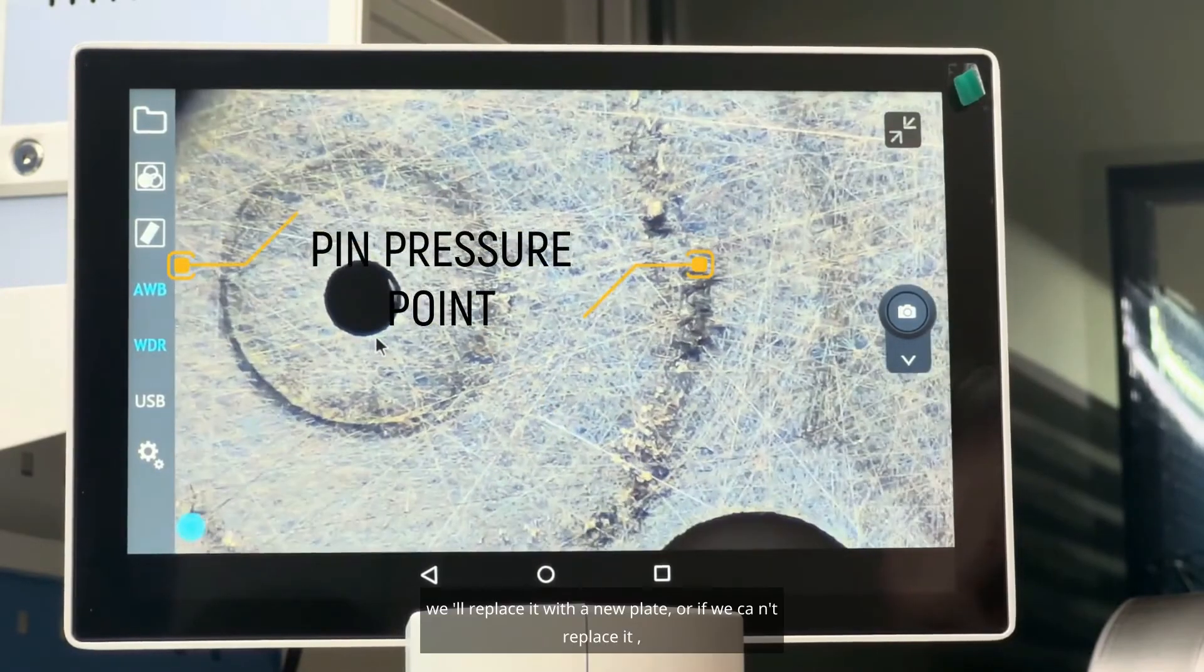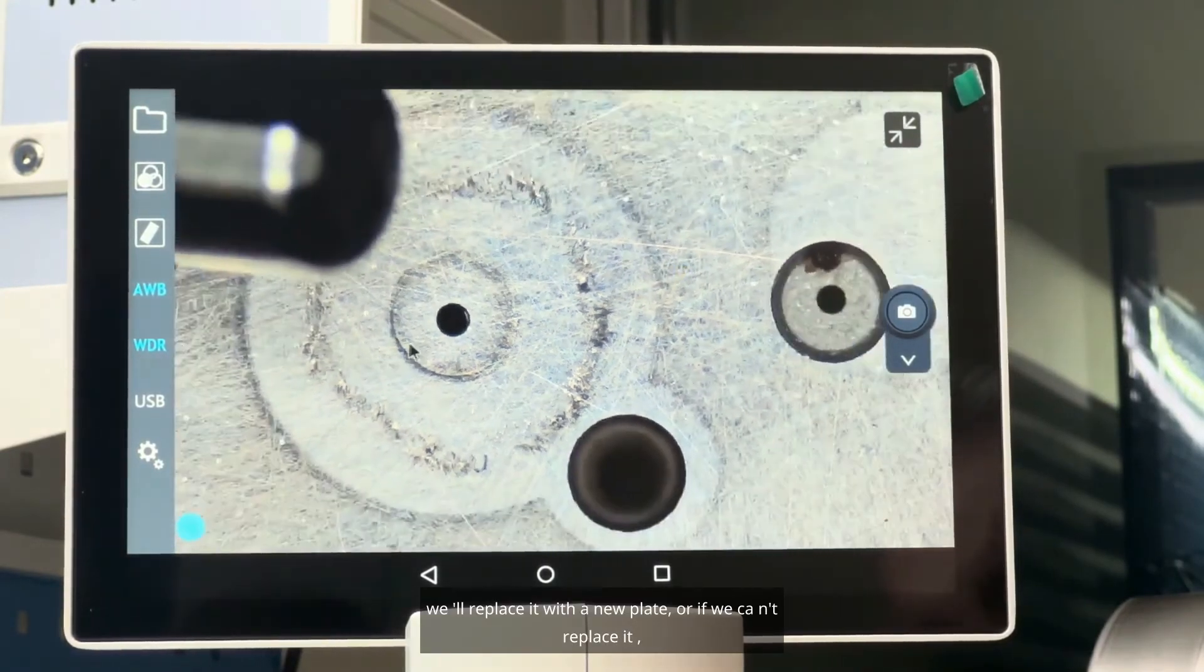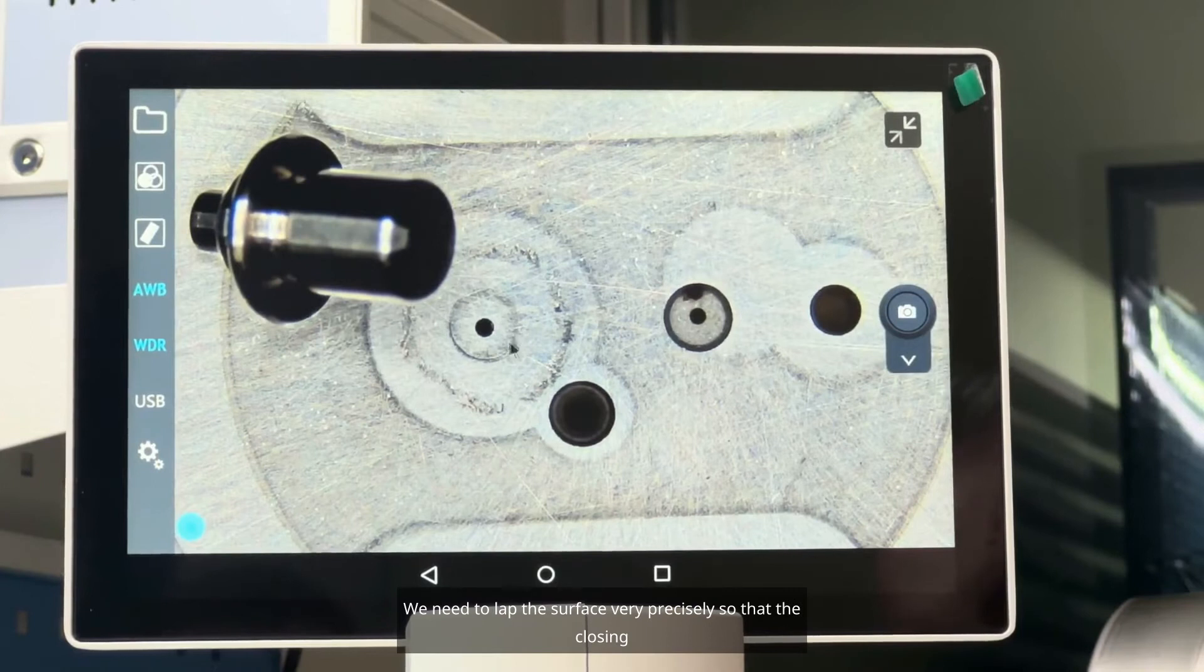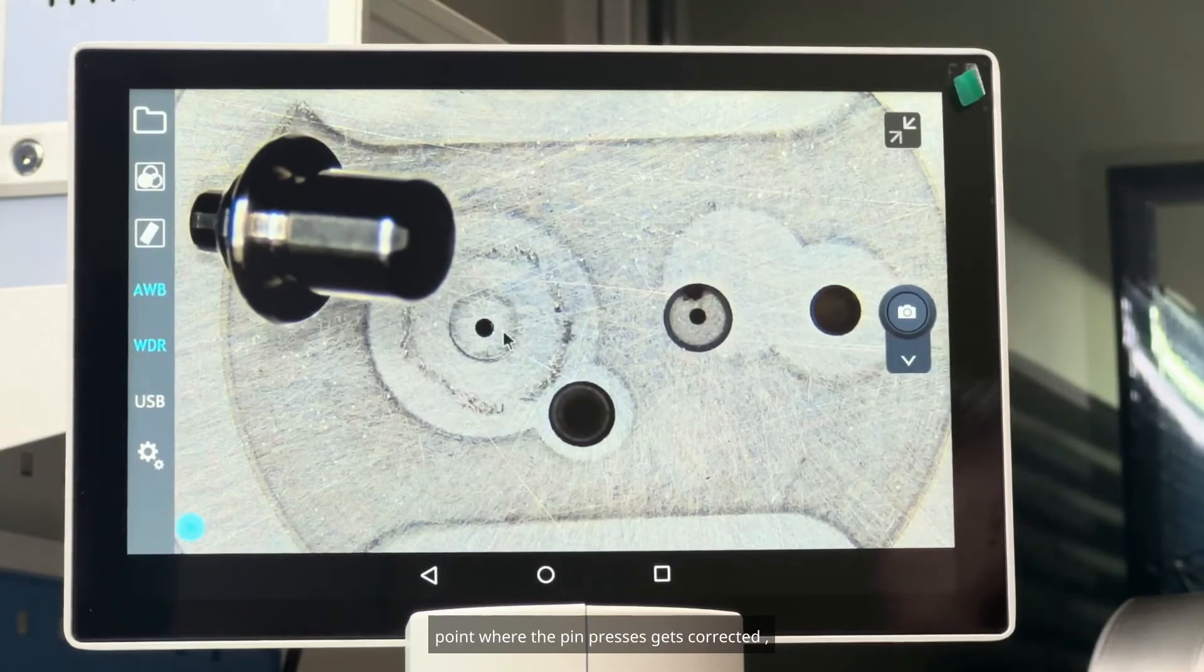Either we'll replace it with a new plate, or if we can't replace it, we'll lap this plate using a fine 1,200 grit diamond plate. We need to lap the surface very precisely so that the closing point where the pin presses gets corrected, and the trigger stroke lengths come into balance.